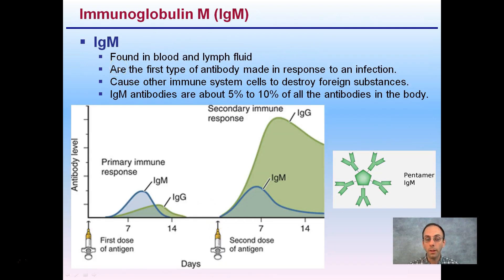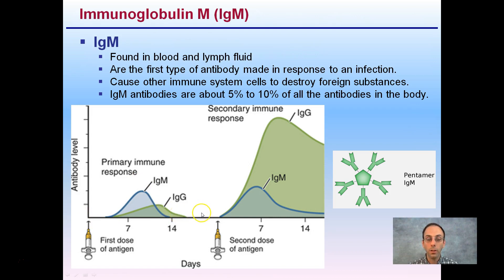IgM antibodies are found in the blood and lymph fluid. They're the first type of antibody made in response to an infection and cause other immune system cells to destroy foreign substances. IgM antibodies make up about 5% of all antibodies in the body and are the only ones in the pentamer class. Looking at the antibody level graph: with an initial dose of antigen, IgM shows a primary response that rises above IgG and then goes away. With a second dose, IgM does return, but compared to IgG the secondary immune response is minimal.